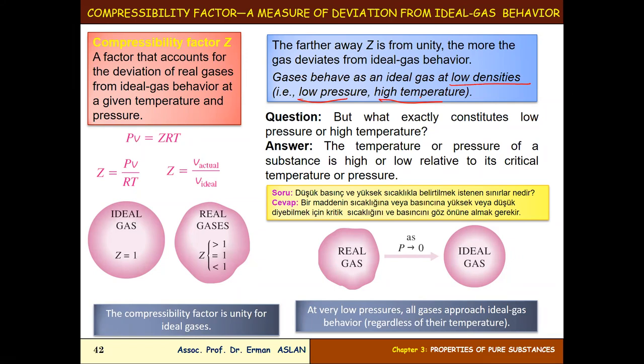The compressibility factor Z is a factor that accounts for the deviation of real gases from ideal gas behavior at a given temperature and pressure. It tells us whether a real gas equals an ideal gas or deviates from it.